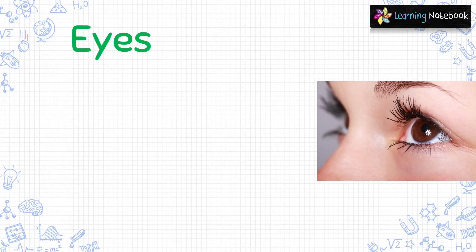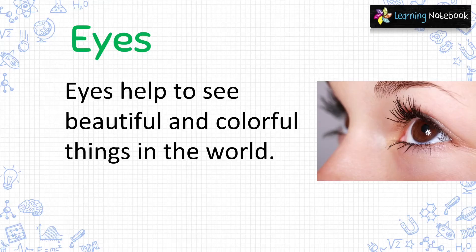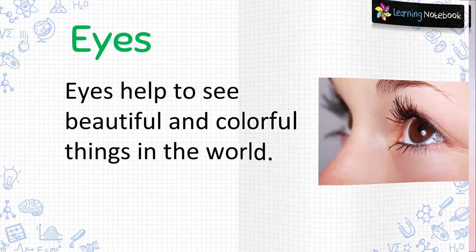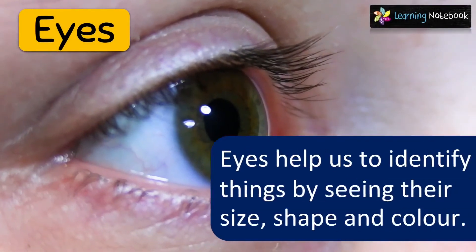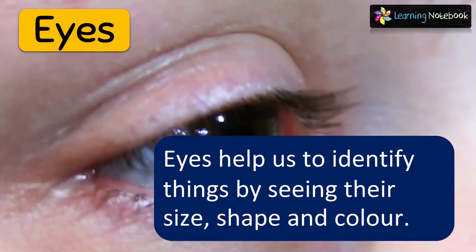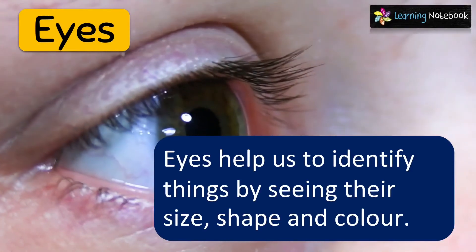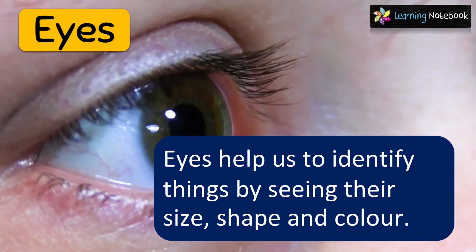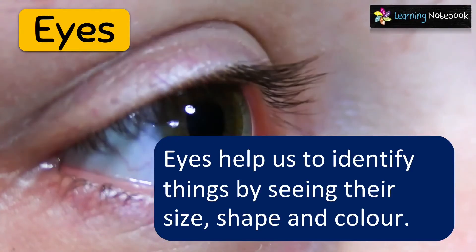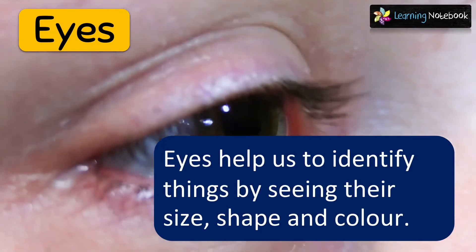So, the first sense organ is our eyes. Eyes help to see beautiful and colorful things in the world. Eyes also help us to identify things by seeing their size, shape and color.